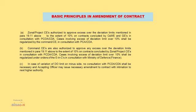We have now discussed the basic principle in amendment of contract. Amendment of contract is required when any additional alteration is done during the currency of the contract. The Chief Engineer (Projects) is authorised to approve excess over the deviation limit mentioned above to the extent of 10% on contracts concluded by CW and the engineer concerned with PCDA or CDA. Cases involving excess of deviation limit over 10% shall be regularised by the Command Chief Engineer in consultation with CDA through amendment to contract.